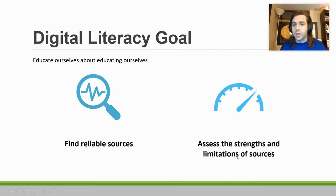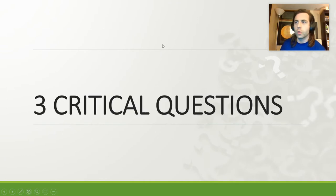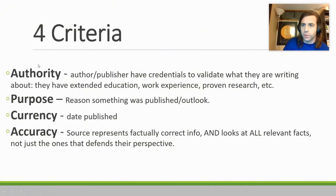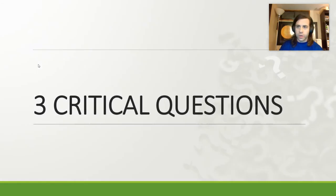When we do find a source that we think is good, what are the pros and what are the cons of that source? To help us in that goal, last video we took a look at these four criteria: authority, purpose, currency, and accuracy. In addition to those four criteria, I'm going to give you three critical questions — questions we can ask to help us evaluate these four criteria. So four criteria, three questions. Let's get going.